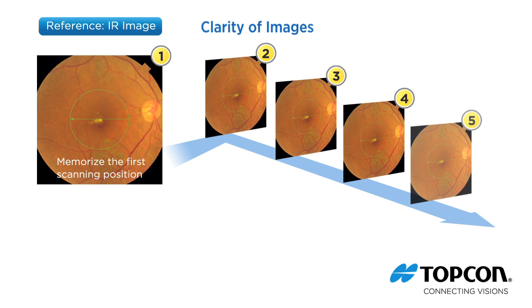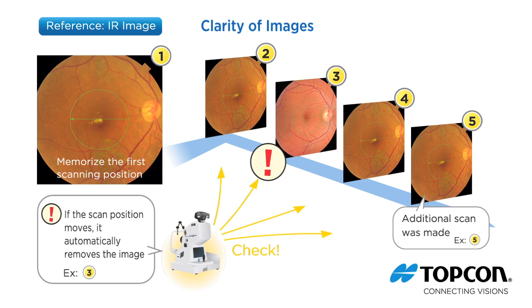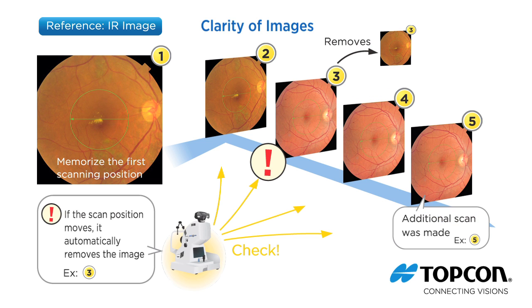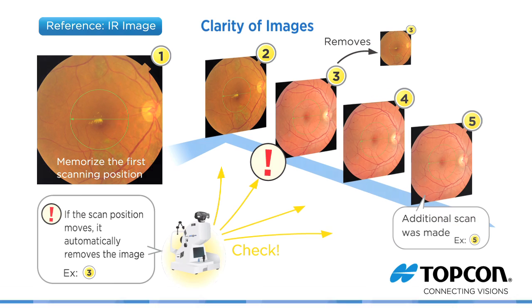IR tracking utilizes the IR image during capture to overlap exactly the same place of the retina. If the scanned area moves, the rescanning function will begin automatically.